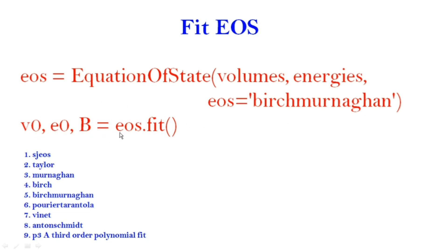I get volume, energy, and bulk modulus once I call eos.fit(). Different equation of state types are available: if you want the Murnaghan EOS, use 'murnaghan'; for a third-order Taylor function use 'taylor'; for Birch-Murnaghan use 'birchmurnaghan'; or use 'vinet' or polynomial third-order ('p3'). Depending on your particular research problem, you can choose the appropriate equation of state.